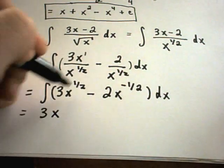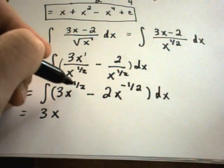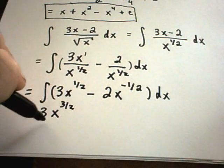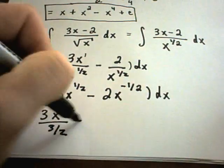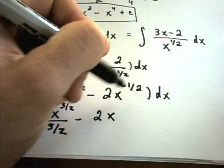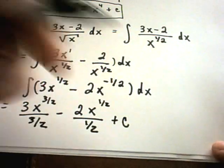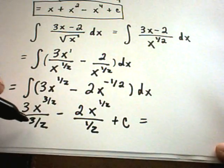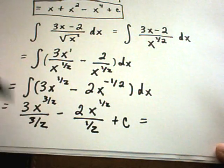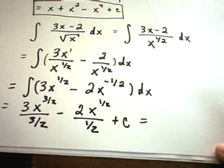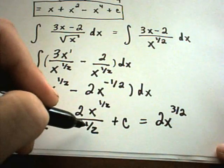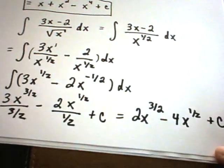The 3 comes along for the ride. Adding 1 to the exponent one half gives three halves, so we divide by three halves. For the second term, adding 1 to negative one half gives positive one half, and we divide by one half, plus c. Simplifying: dividing by three halves is multiplying by two thirds, so the threes cancel giving 2x to the three halves. Dividing by one half is multiplying by two, so minus 4x to the one half, plus c. There is your anti-derivative.